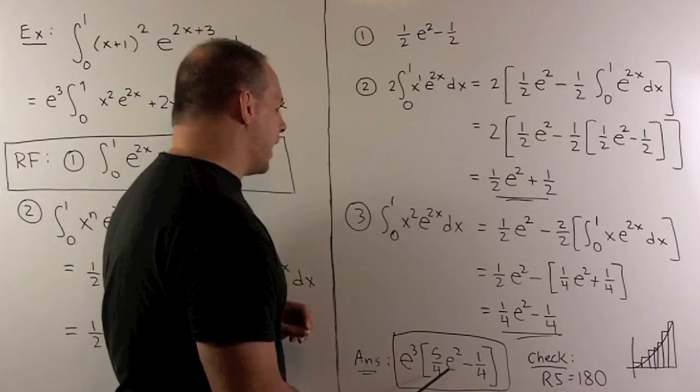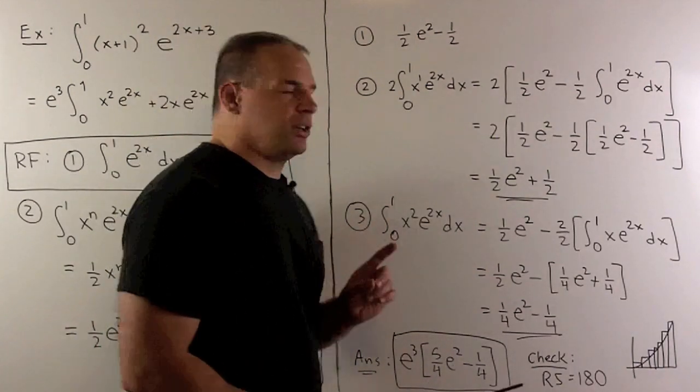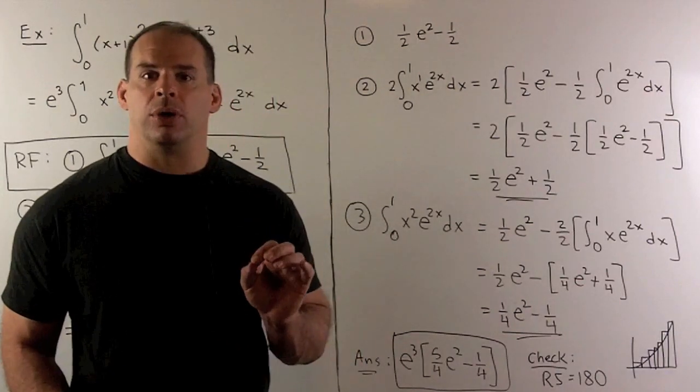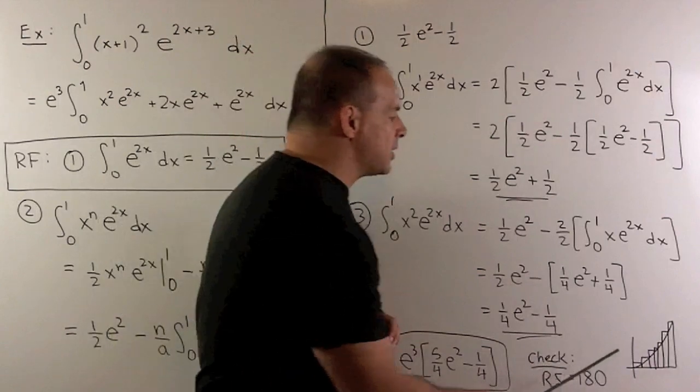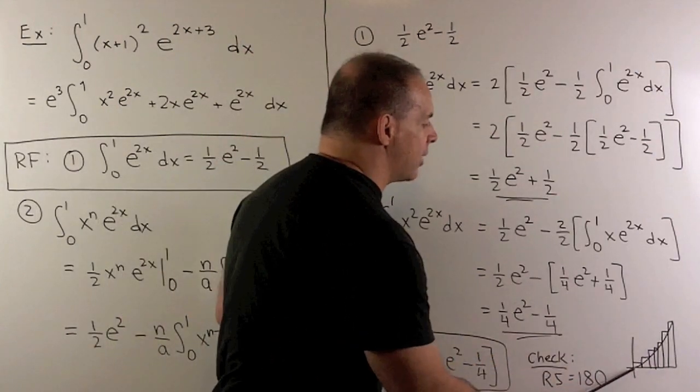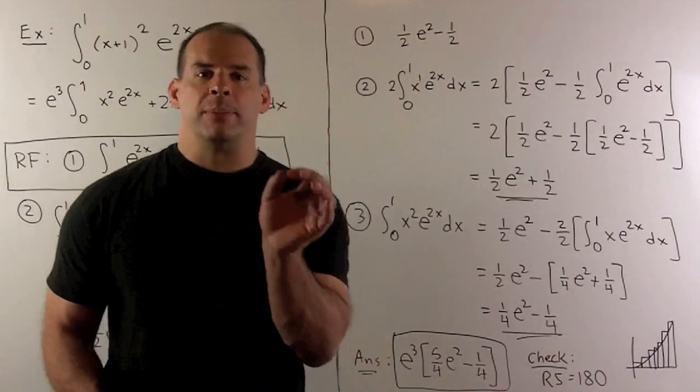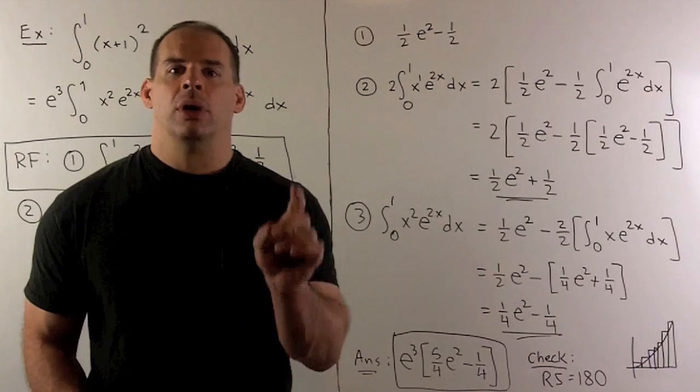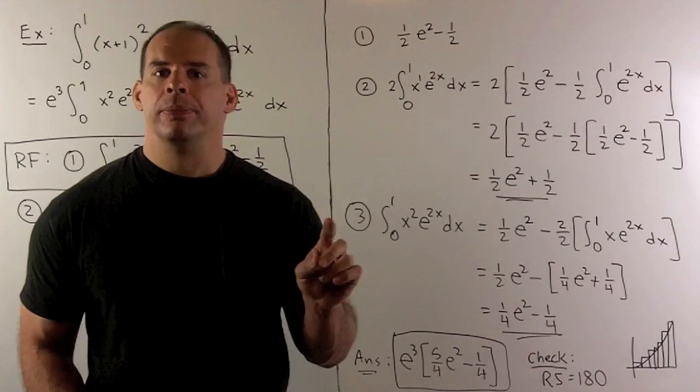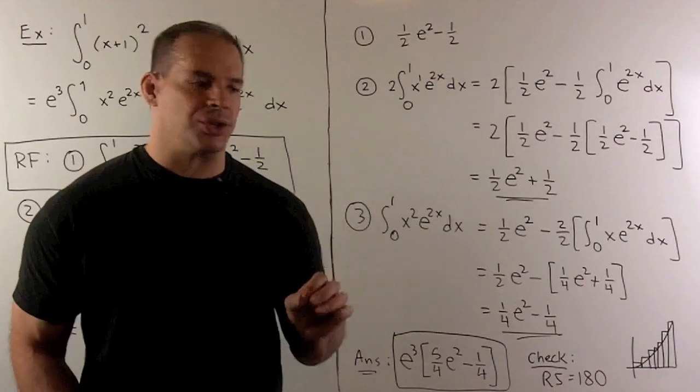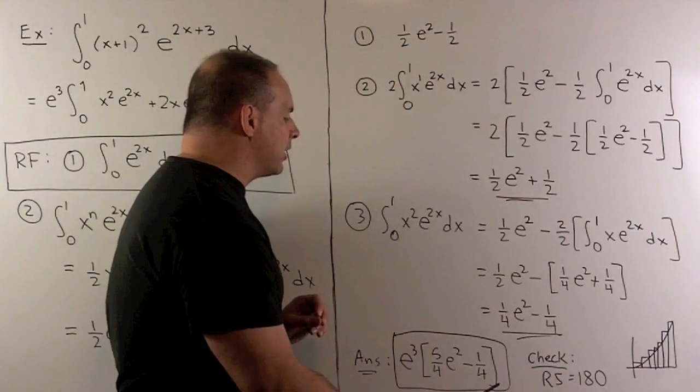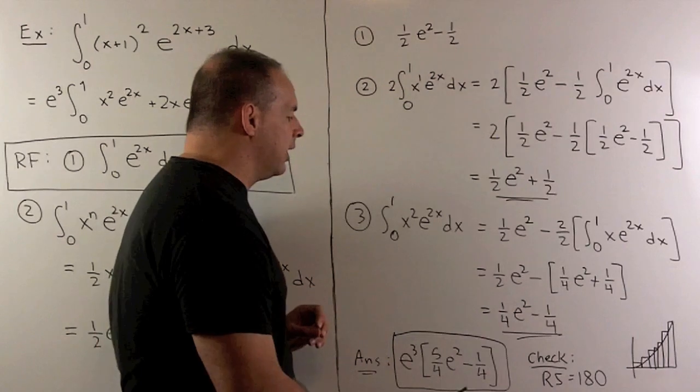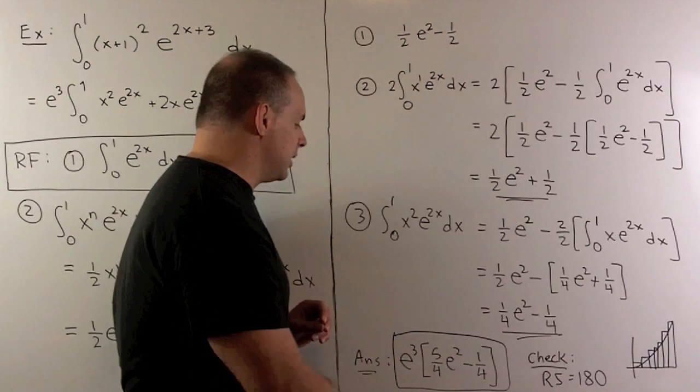Now, if I want to check my answer, well, one thing I could do, if I have access to a computer, is compute a Riemann sum. So, the idea is we're going to approximate the area under this curve using rectangles. If I let the base of those rectangles be equal to 0.0001, we crank that out with a few lines of code, we get 180. Then, if we put this through a calculator, we see that this is close to 180. So, our work seems to check out.